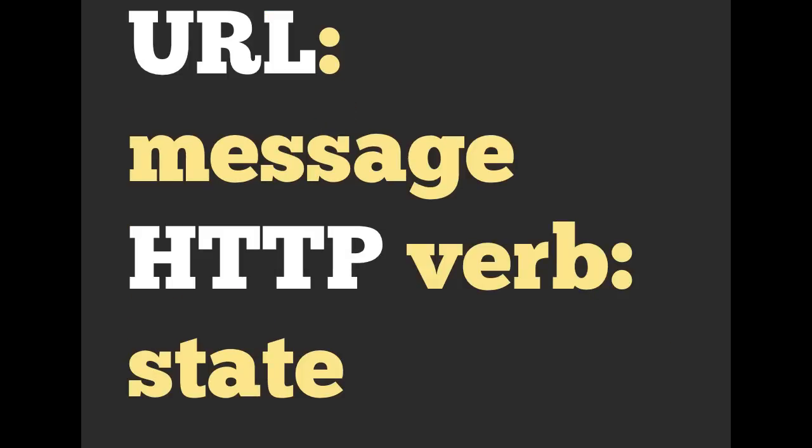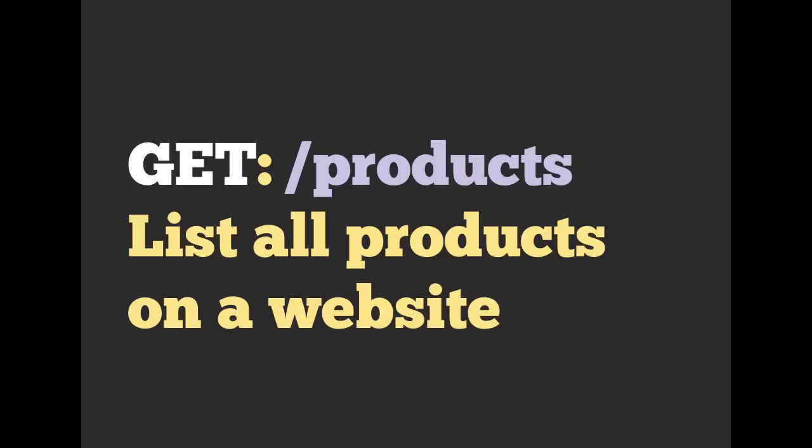For computers, the URL is going to be the message — this would be, say, github.com or heroku.com. And the HTTP verb is going to be the state. Last time we talked about using a GET verb or a POST verb. Those are two different states that we can send with that exact same message, which would be the URL. Let's take a look at an example.